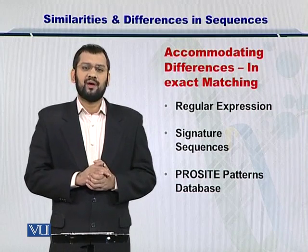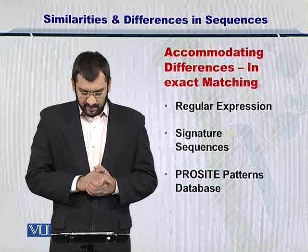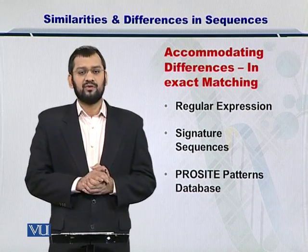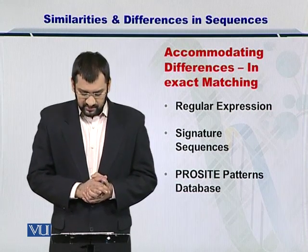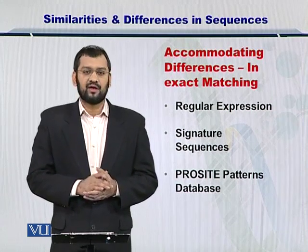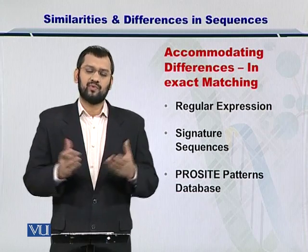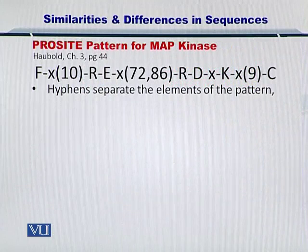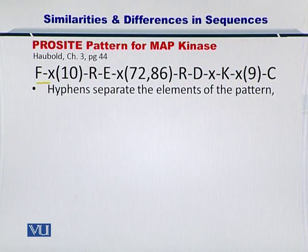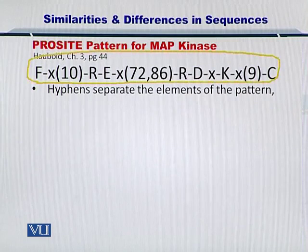Accommodating differences can be done by exact matching tools, and there are various options you can use, such as regular expressions, signature sequences, and the ProSite patterns database, which we will discuss later in detail. So let's take a look at the ProSite pattern. This is a pattern that is given in your textbook, chapter three, page 44.